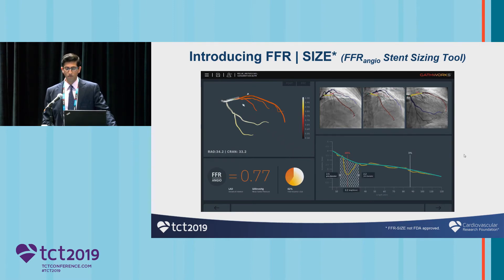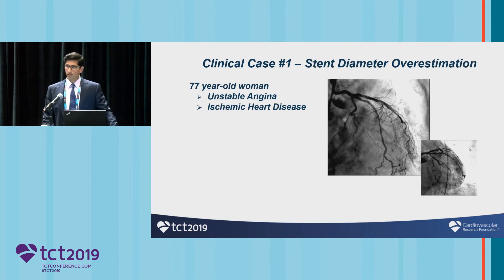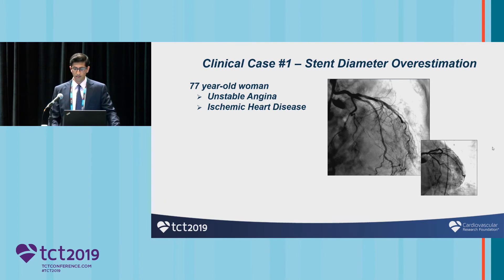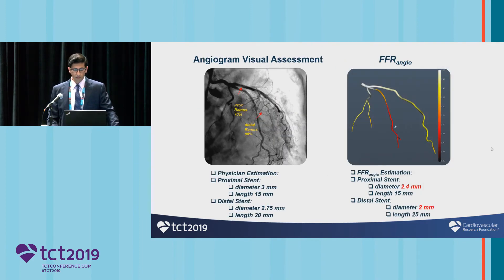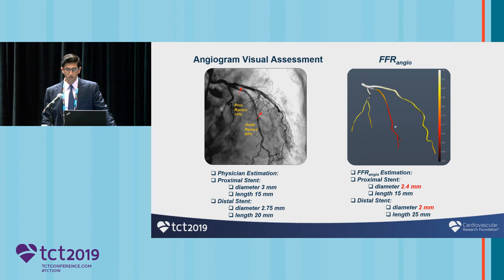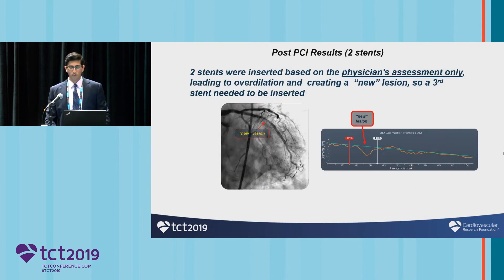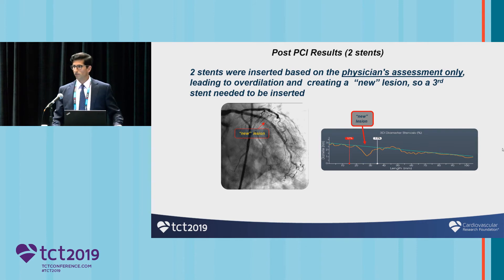You can see there placing a virtual stent to overlie the area and approximate whether you'll be covering the lesion. This is an example: a 77-year-old woman with unstable angina and a history of ischemic heart disease. The coronary angiogram shows diffuse disease in the LAD and a large-caliber ramus. The physician estimation was a proximal diameter of 3mm, length 15mm, and distal diameter 2.75mm, length 20mm. The FFR angio estimation showed the proximal diameter was actually much less at 2.4mm, with similar length, and the distal stent also a smaller vessel.